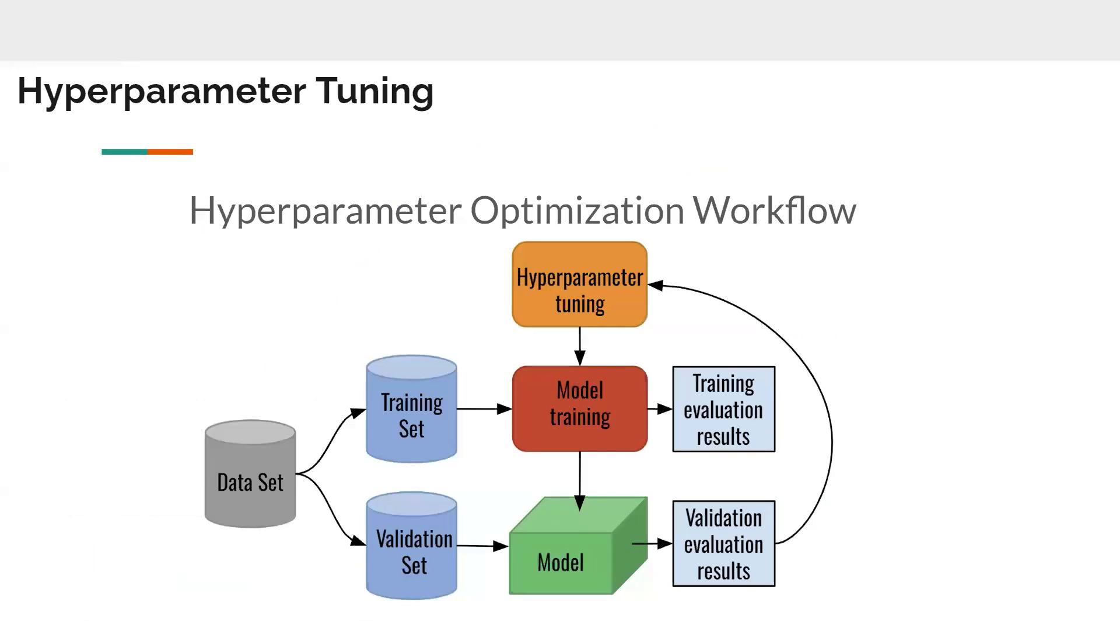Now we get to the hyperparameter tuning. Basically, you can imagine this as we train the model multiple times and we train it each on different slight tunes. And each time we train it, we get a different result, but we have the same data. And so we can see which model is the best.